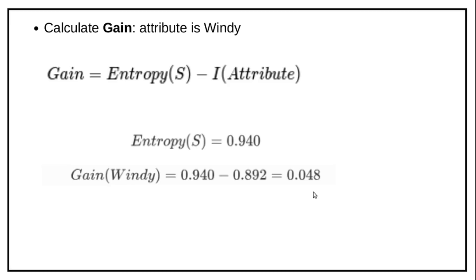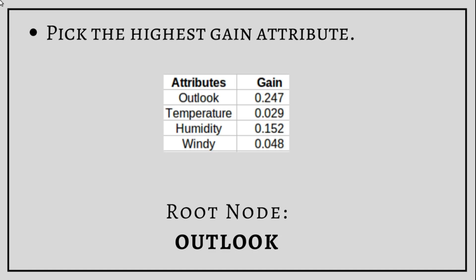Now we compare all the gain values: outlook 0.247, temperature 0.029, humidity 0.152, windy 0.048. The highest value is outlook, so we pick that attribute — this will be our root node. Our root node is outlook.